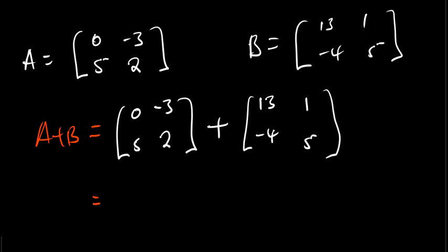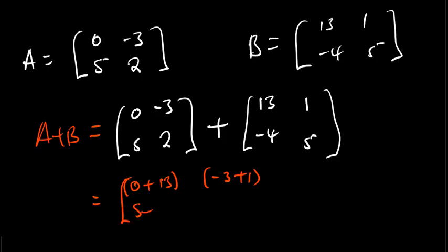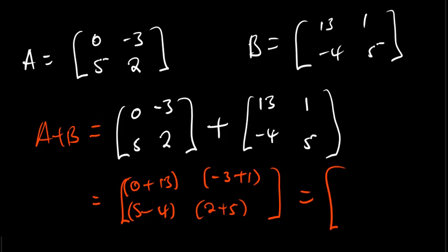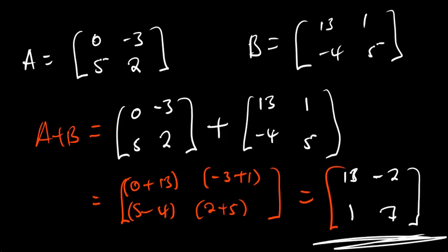We are going to say: 0 plus 13, then negative 3 plus 1, then 5 plus negative 4, then 2 plus 5. When you do that, the final answer will be: 0 plus 13 is 13, 5 minus 4 is 1, negative 3 plus 1 is negative 2, and 2 plus 5 gives 7. So this is the addition of matrix A and matrix B.